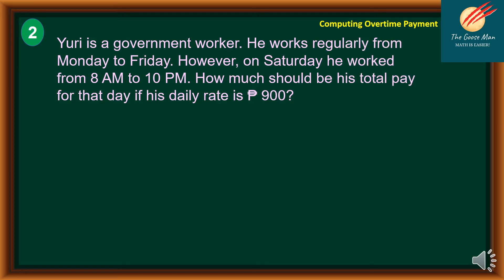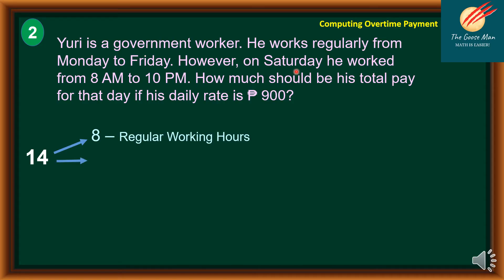For example number 2: Yuri is a government worker who works regularly from Monday to Friday. However, on Saturday, he works from 8 a.m. to 10 p.m. How much should his total pay be for that day if his daily rate is 900 pesos? Since he works Monday to Friday, Saturday is his rest day. He is in the office for 14 hours total, which breaks down into 8 hours of regular working hours, 1 hour of rest time, and 5 hours of overtime.